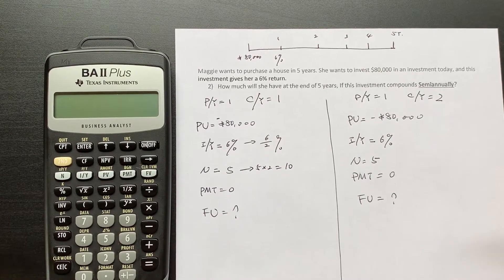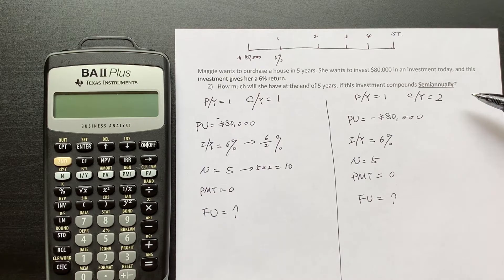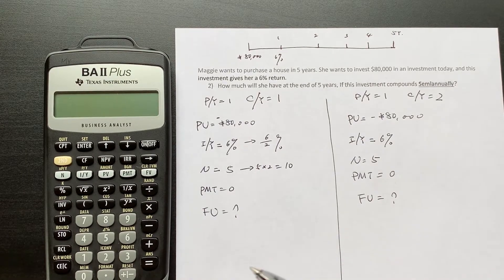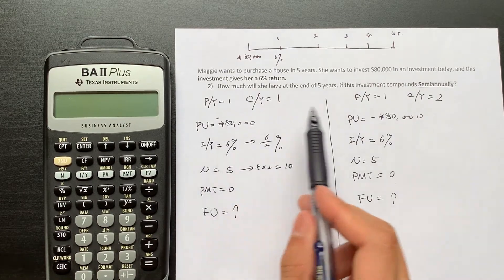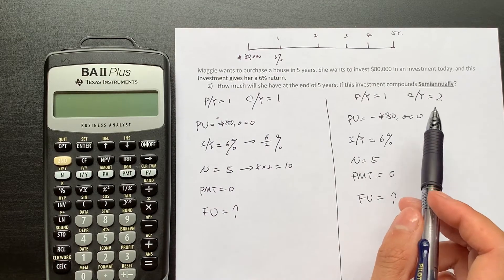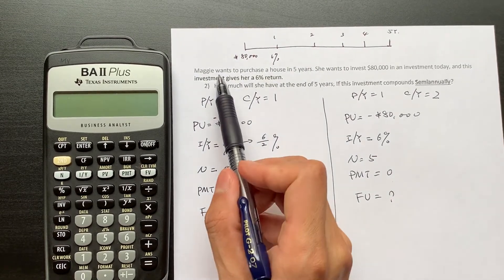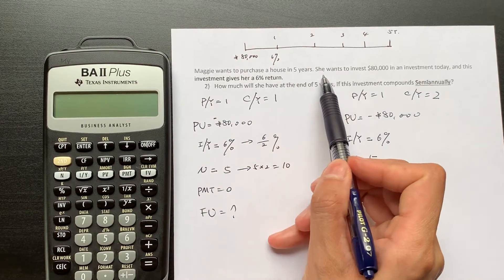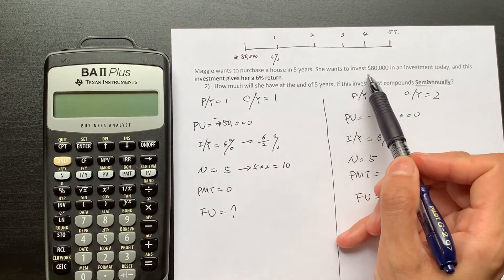Hi, today I want to show you how to solve this problem using two ways with your calculator. Let's look at the problem first. Maggie wants to purchase a house in five years, she wants to invest...